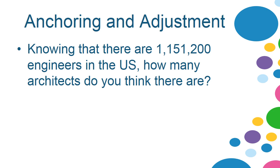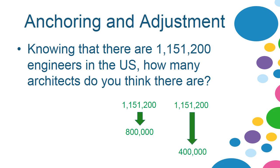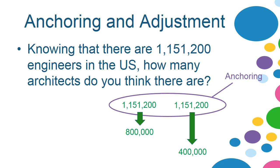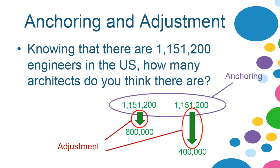Now I'll ask you: how many architects do you think there are, knowing that there are more than a million engineers? You'll probably think that's a number of engineers, so there aren't quite as many architects — maybe 800,000, or maybe 400,000. That initial number is your anchor, and then you adjust down from it — or you could also adjust up. That's anchoring and adjustment: you have an initial value, lock onto it, and move from there. If you're curious, there are actually only about 100,000 architects in the US.